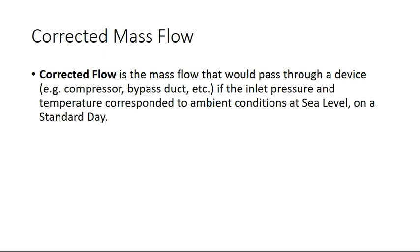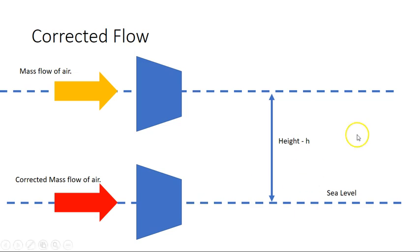For example, if I have an engine here and this is the engine inlet with a cross-section area A, there will be a certain mass going through that engine. So what would be the mass going through that engine if it were down here at sea level?